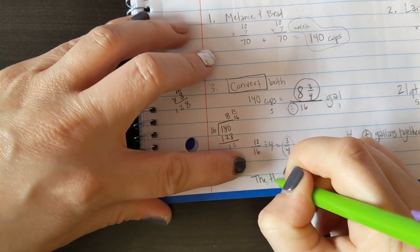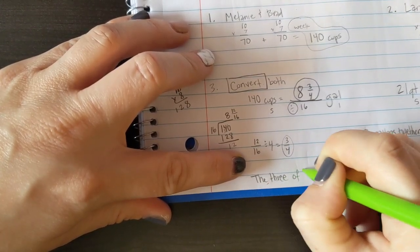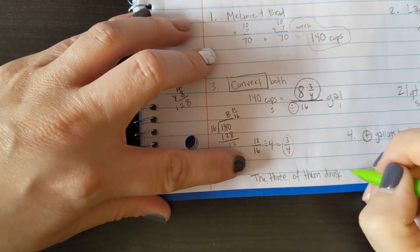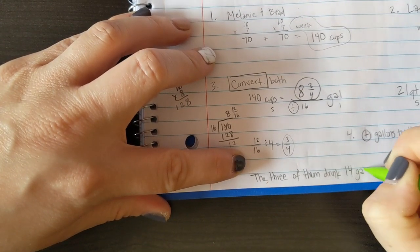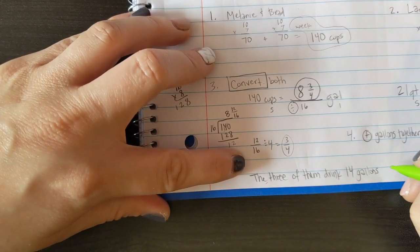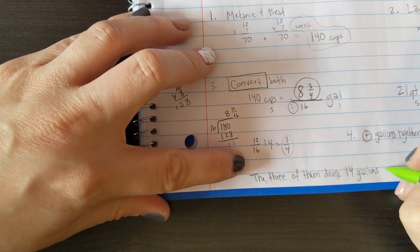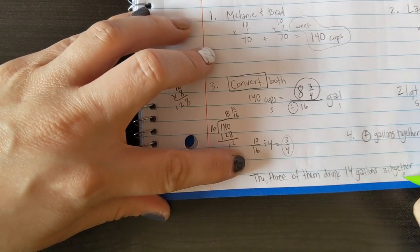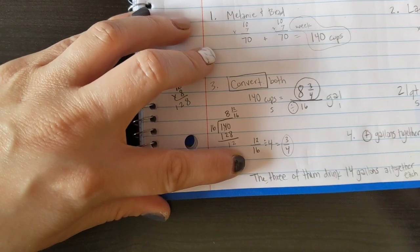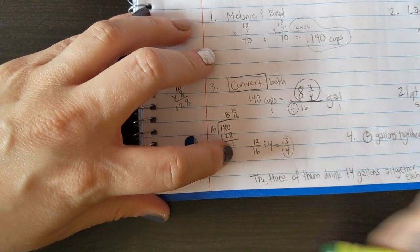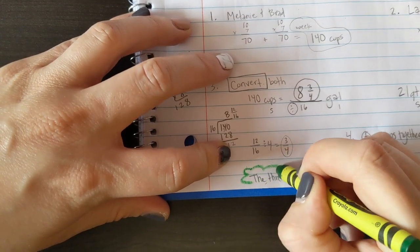It says how many gallons of water do the three of them drink all together? The three of them drink 14 gallons all together each week. Running out of space, sorry. That is my final answer. I'm gonna put it in a cloud in green.